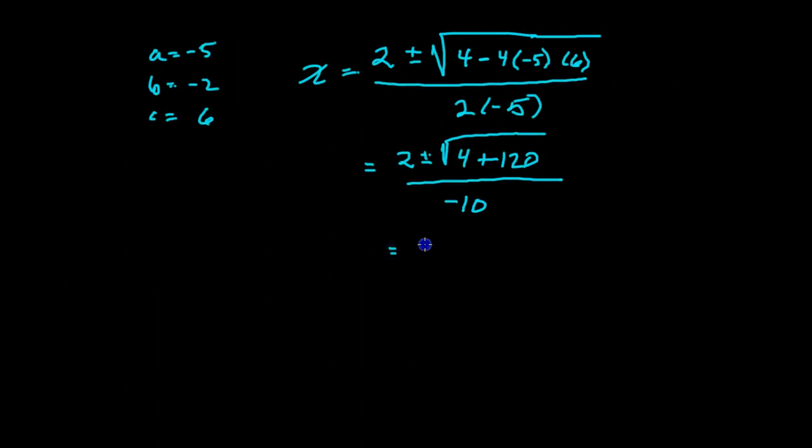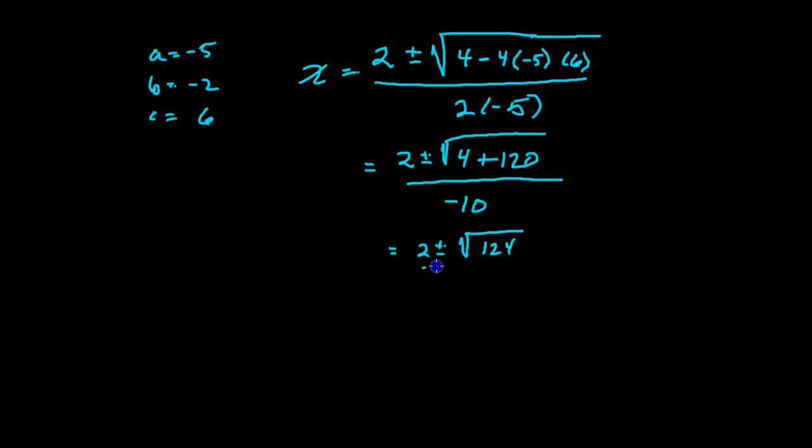Let's continue simplifying. Underneath the radical, everything else is going to stay the same. But underneath the radical, I have 124.